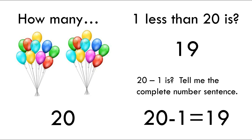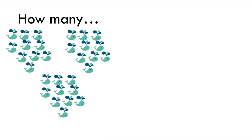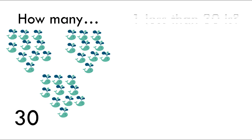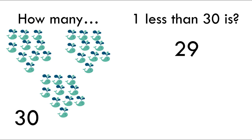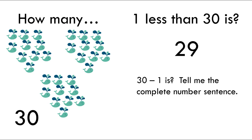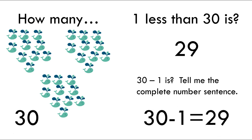So this is how we're going to do the rest of these. How many? Did you say 30? Very good! 1 less than 30 is — tell me — 29. 30 minus 1 — remember, you're telling me the complete number sentence. Did you say 30 minus 1 equals 29? If you did, give yourself a kiss on the brain!